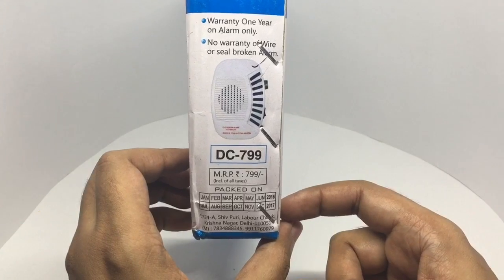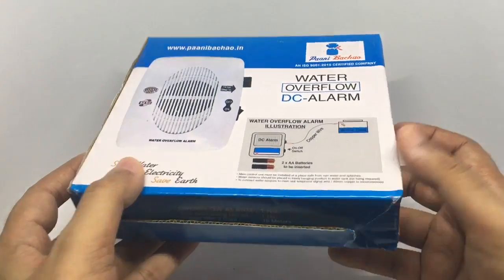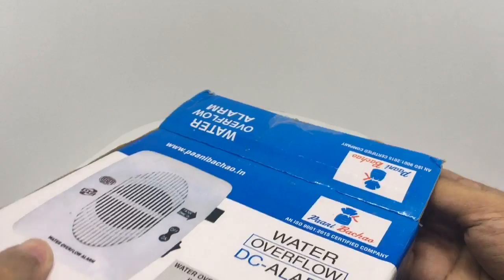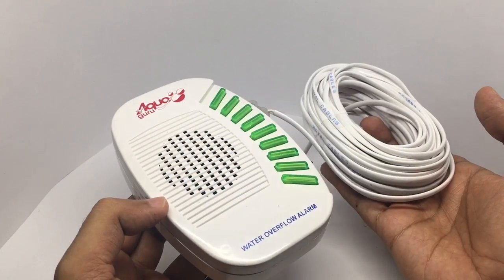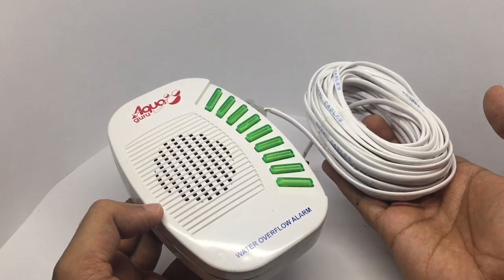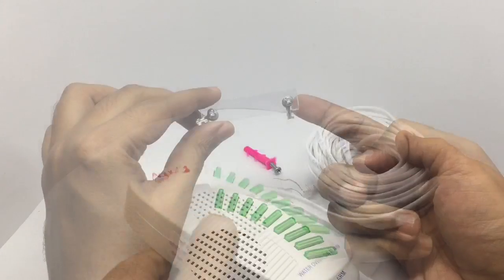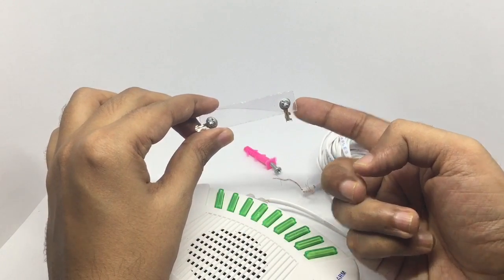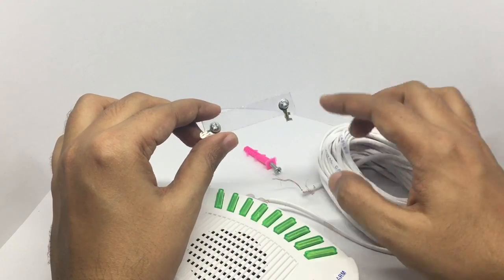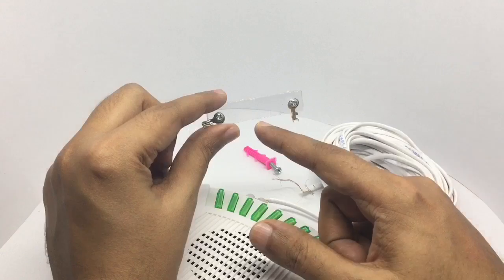This is what you get inside the package. You get this alarm and nearly 15 meters of copper wire. You're supposed to stick this in your tank and these leads go on here. When water touches both of these, the alarm goes off.